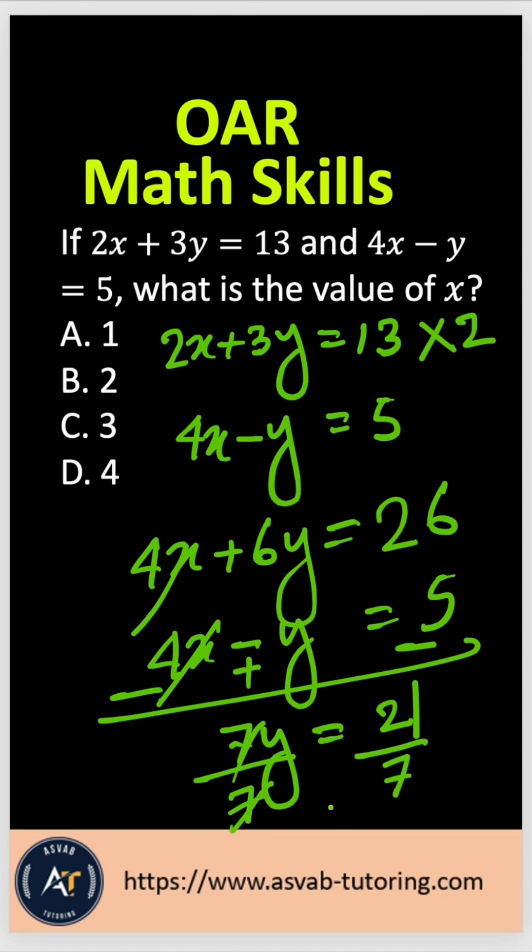7, 7 cancel out. So that gives you y equal to just 3. With that, the correct answer is option C.